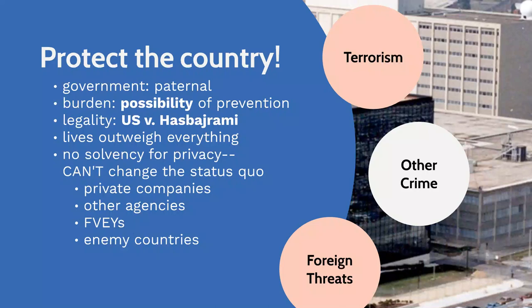In terms of legality — U.S. versus Hasbajrami ruled that the surveillance programs of the NSA are constitutional. The con team can also say, depending on your contentions, that lives outweigh everything else. It's really cute that you want privacy and all your rights, even in this dangerous age of 2020. It's unfortunate but also so privileged to think that U.S. hegemony doesn't matter — lives outweigh everything. If you're dead, you don't have any rights. Next, there's no actual solvency for privacy: even if you abolish the NSA, you're still being spied on by private companies, other government agencies, Five Eyes, and enemy countries like Iran, North Korea, Russia, and China. Nothing changes.